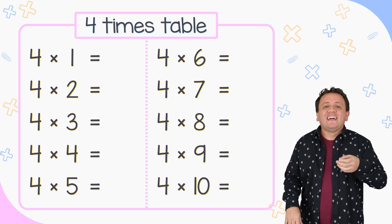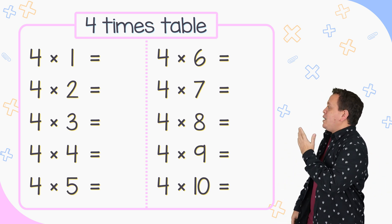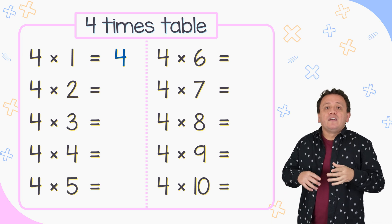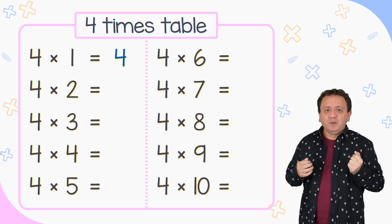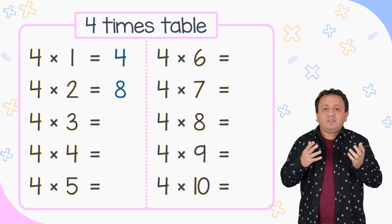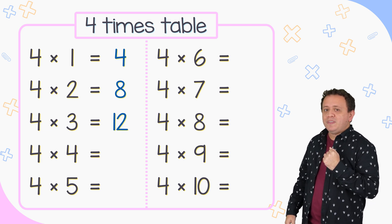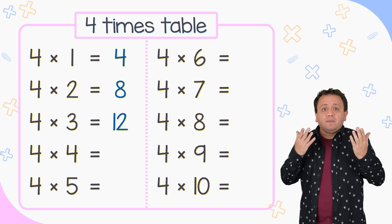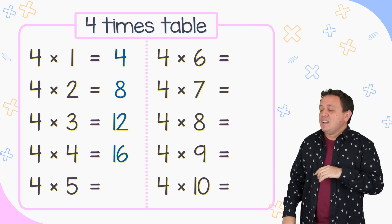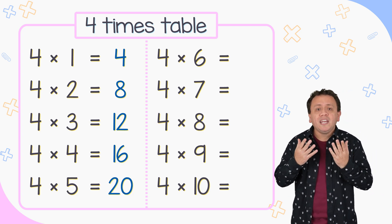It's time to study the 4 times table. Are you ready? 4 times 1 equals 4. 4 times 2 is equal to 8. 4 times 3 equals 12. And 4 times 4 is 16. 4 times 5 is equal to 20.